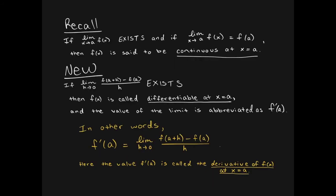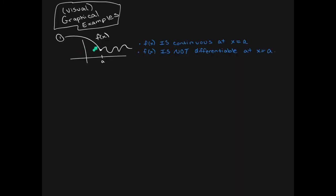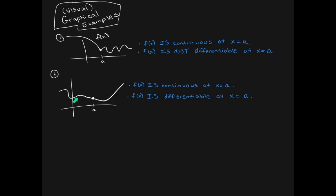For the function to be differentiable, the secant lines on the left would have to match the slope of the secant lines on the right — it has to be a smooth transition. To recap: if the limit of the function's height exists and equals f(a), the function is continuous at x equals a. If the limit of the slopes of the secant lines exists — meaning slopes match on the left and right — that's called differentiable at x equals a, and the value of that limit is called the derivative. A function can be continuous at a point but not differentiable there if there's a kink, but the slopes do not match.